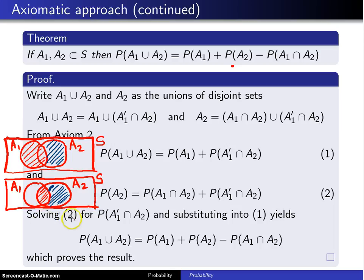When we solve equation 2, so here is equation 2, when we solve it for the probability of A prime intersect A2, what you are going to get is you are going to get P of A2 minus P of A1 intersect A2. And when you plug that in up top here for that expression, you wind up with P of A1 union A2 is P of A1 plus P of A2 minus P of A1 intersect A2. And if you look up top, that is exactly the result that we are trying to prove.